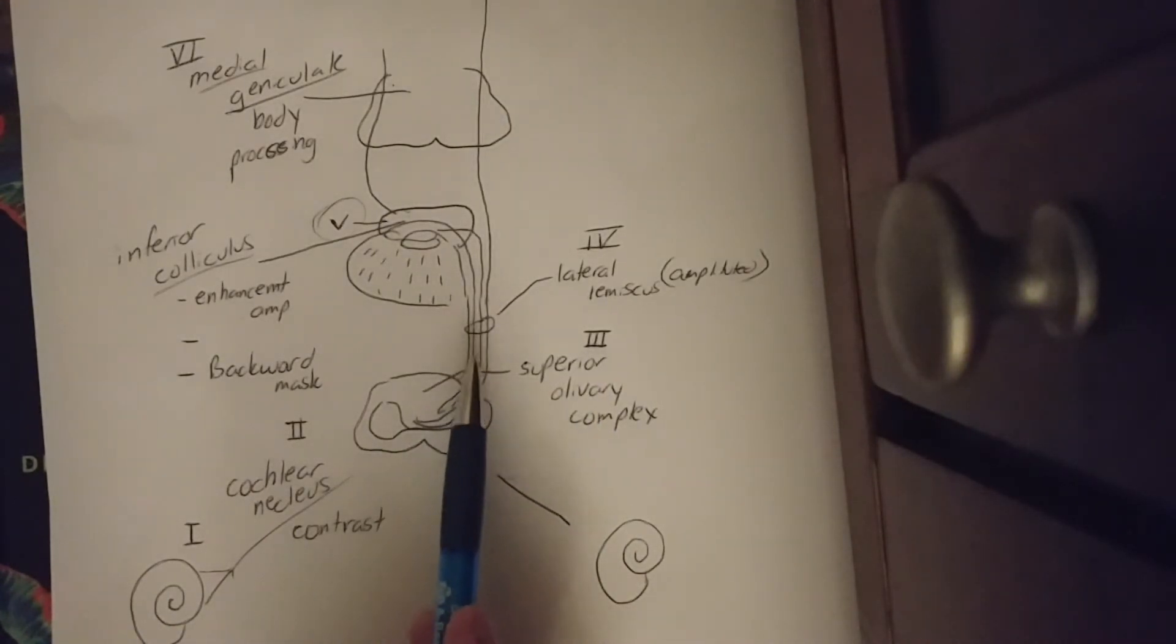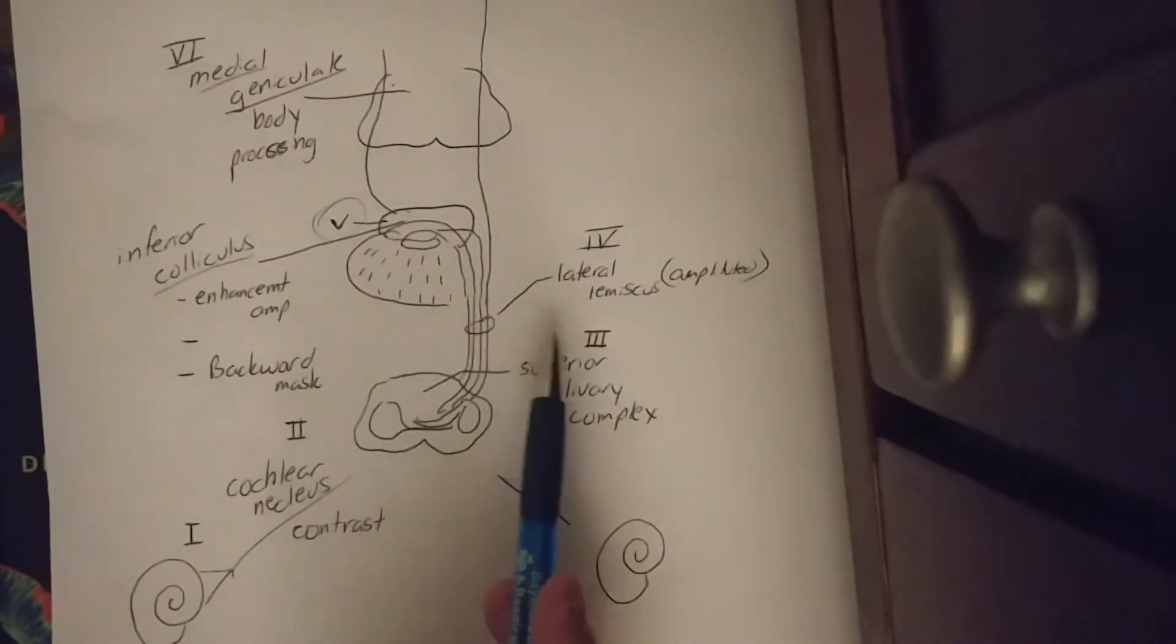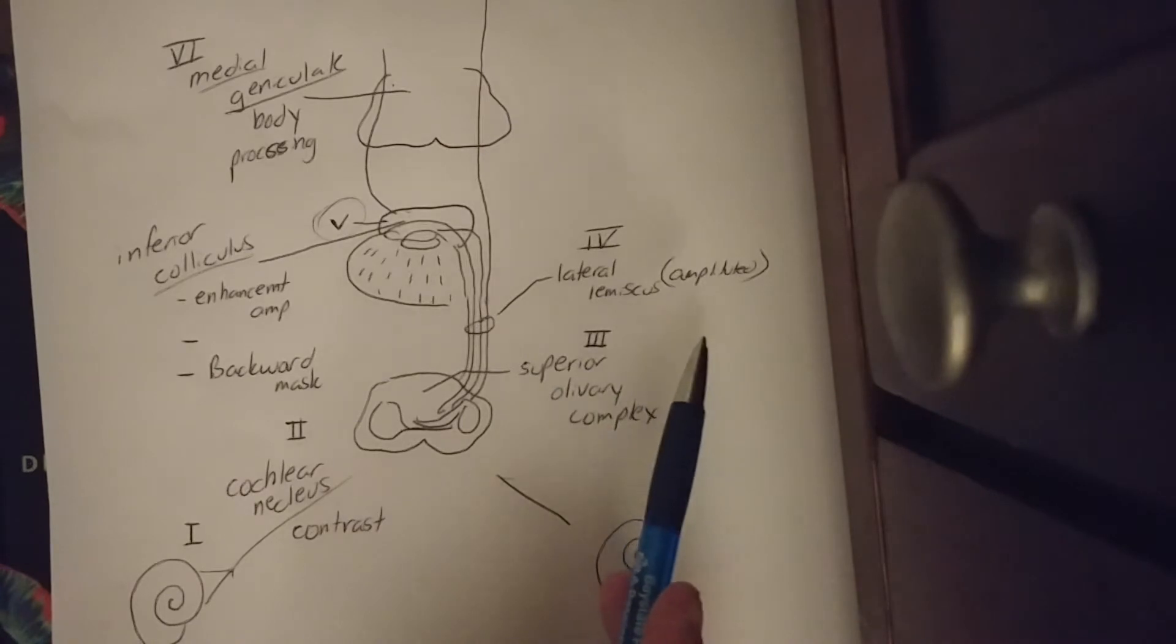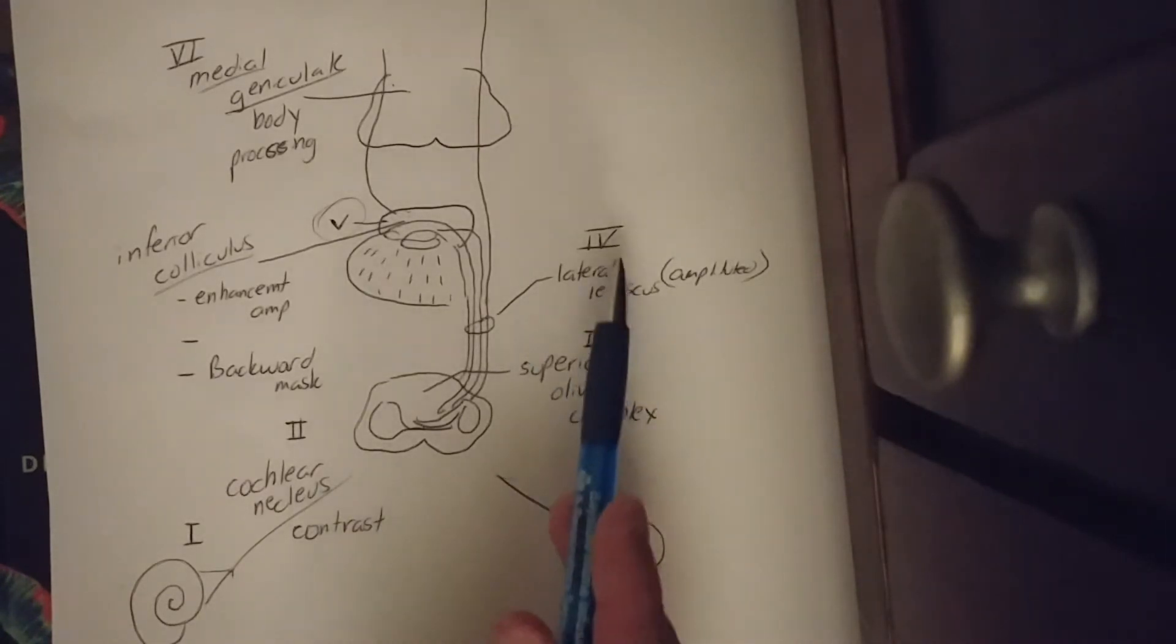From there, moving up, I'm going to go through a bundle of nerves called the lateral lemniscus. And this helps with amplitude of sound, which is wave four.